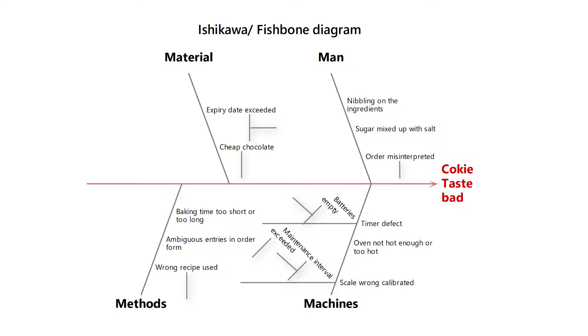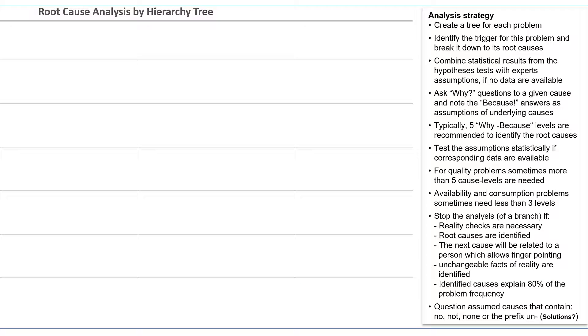Furthermore, deep branching and necessary cross-connections make an Ishikawa Diagram quickly unclear. In contrast, hierarchical trees are very well suited to structure the occurrence of a problem, step by step and comprehensively from its trigger to its root causes. I want to additionally integrate our statistical results in the cascade of why-because structure, and thus link the quantitative evidence with rational assumptions into a common analysis strategy to build the hierarchy tree.